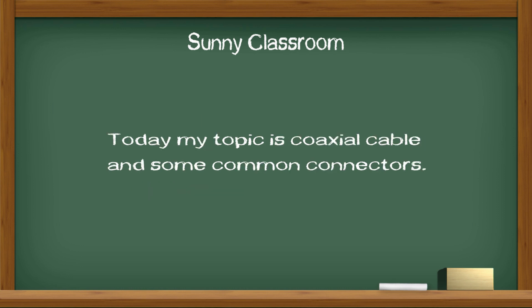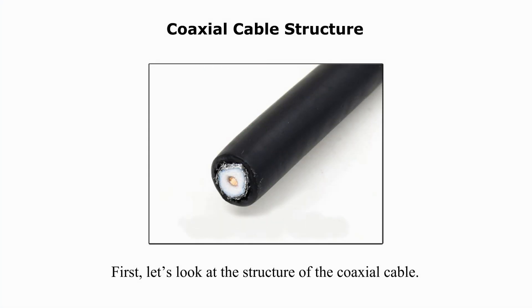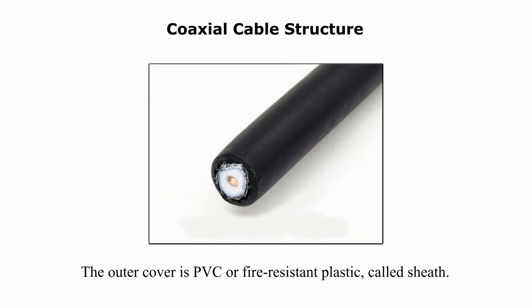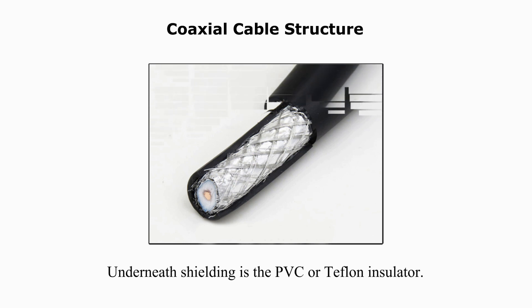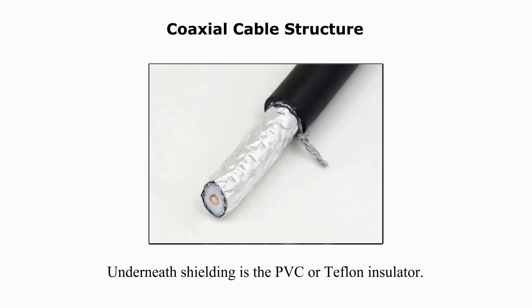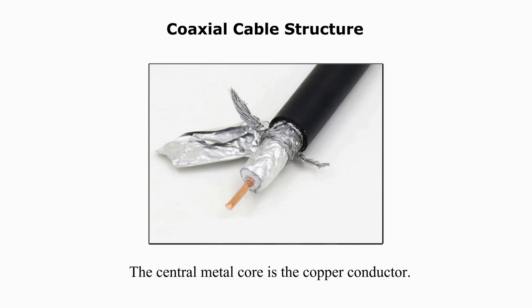Today my topic is coaxial cable and some common connectors. First, let's look at the structure of the coaxial cable. The outer cover is PVC, a UV-resistant plastic called the sheath. The braided metal shielding reduces electromagnetic interference, or EMI. Underneath the shielding is the PVC or Teflon insulator. The central metal core is the copper conductor.